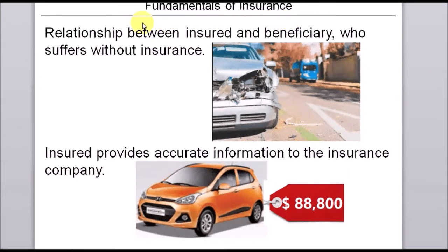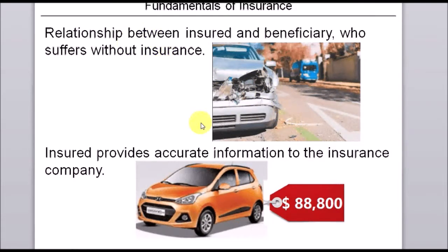There are also other fundamentals of insurance that companies must stick to in order to survive. The first is that there must be a relationship between the insured and the beneficiary who would receive the benefits if something happens to the insured, and the beneficiary should be the one who suffers if there were no insurance. For example, I cannot insure your car because there is no relationship between me and your car. If insurance companies allowed that, they risk becoming bankrupt because there would be an incentive for me to damage your car and receive compensation.